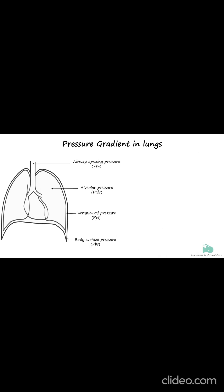Differences between the pressures we discussed earlier are called pressure gradients. There are three key pressure gradients involved in the mechanics of breathing: the transairway, transpulmonary, and the transthoracic pressure gradients.